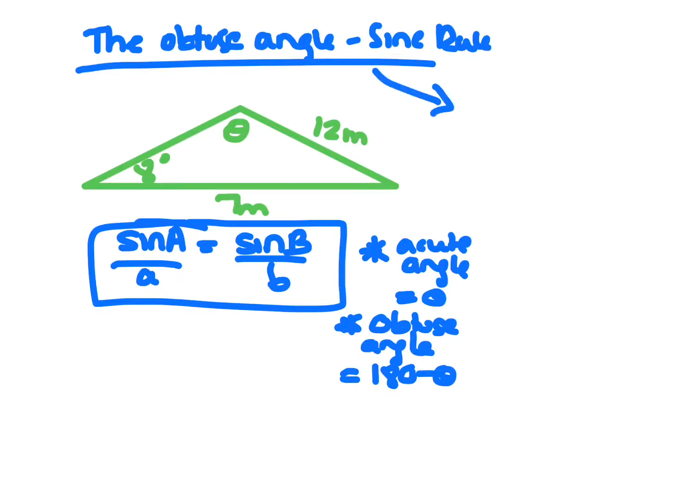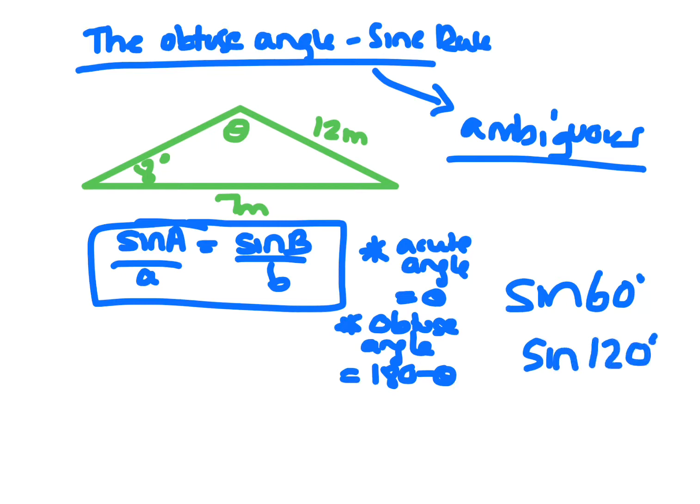Let's look at an obtuse angle triangle, often called the ambiguous case because sometimes there could be more than one answer - there could be an acute angle and an obtuse angle. If you put this in your calculator and press sine 60 and press sine 120, you'll find that you get the same thing.